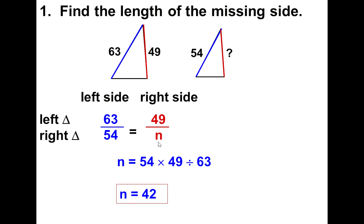Now if you want to use algebra, you would write 63 times n, because they're on the same diagonal, is equal to 54 times 49, because they're on the same diagonal. The cross products are equal. So we would multiply and then divide both sides by 63.